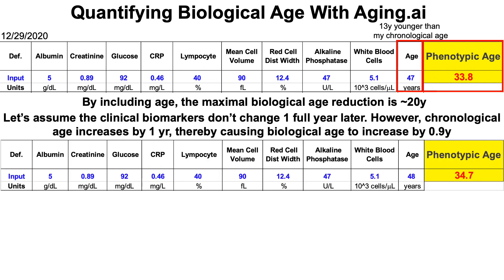Taking this further, let's assume that my biomarker data doesn't change for one full year, but chronological age increases by one year. Using this calculator, my biological age then increases to 34.7. So one chronological year passes and my biological age goes up by 0.9 years, but my biomarker data is exactly the same as the year before. To me, this seems like a problem.